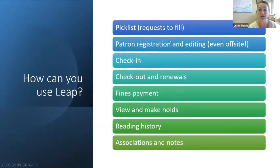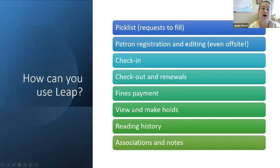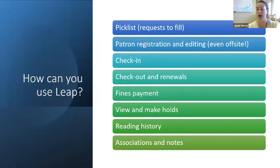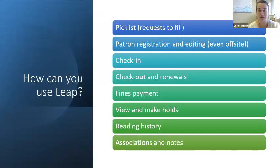You can use Leap for an enormous range of tasks. You can use it to fulfill your pick list, register patrons, check in returned items, check out and renew items, take fine payments, waive fines, view and make holds, view your patron's reading history if that function has been activated, reprint receipts, print fines and fees from accounts, and create associations and notes. For instance, if Uncle Jim isn't getting around as well as he used to and Bev wants to pick up his holds for him, you can create an association between those two accounts so that one card will do it all.